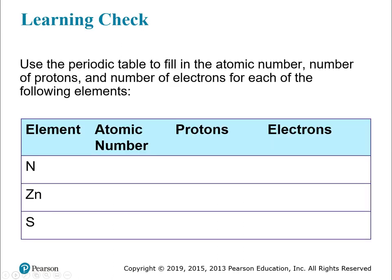Here's a quick learning check. Use the periodic table to fill in the atomic number, the number of protons, and the number of electrons for each of these elements. I'm not going to fill this in for you — I want you to try it. Look up the element on the periodic table using its symbol, find the atomic number above that symbol, and then use the relationship between atomic number, protons, and electrons to fill in the chart.